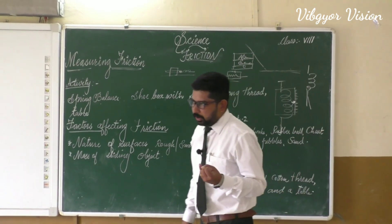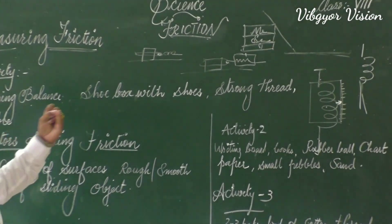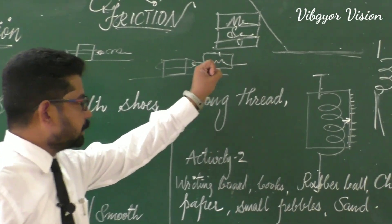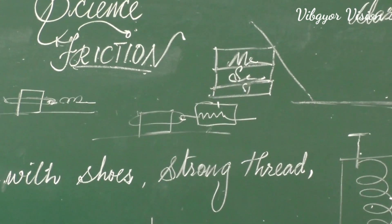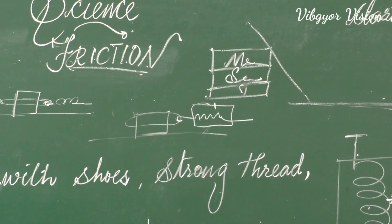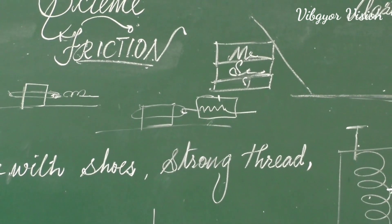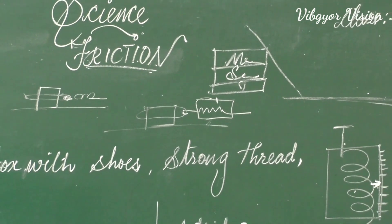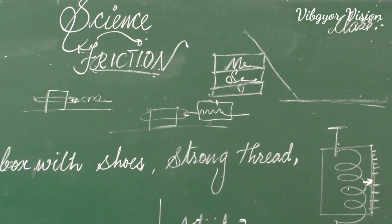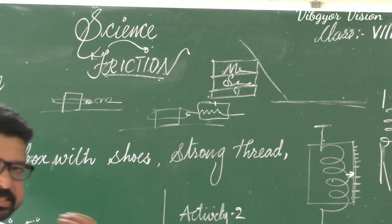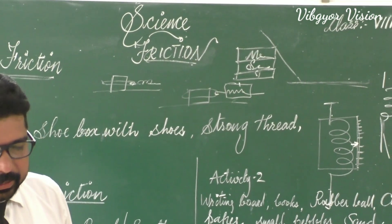In the first case, we noted the reading on the spring balance. In the second case, we noted the reading. And in the third case, we also noted the reading. Obviously, in the third case the reading was the most. That means as mass increases, friction increases.